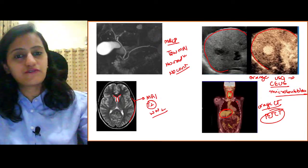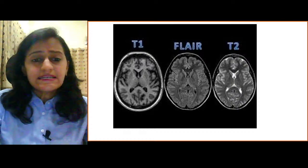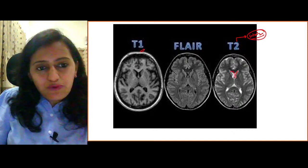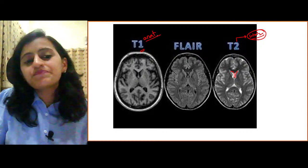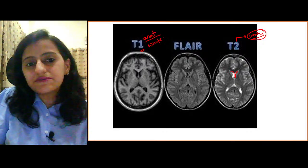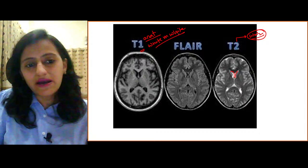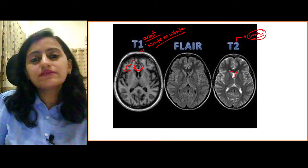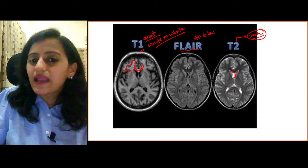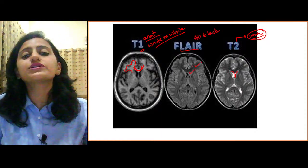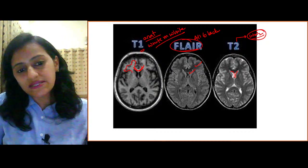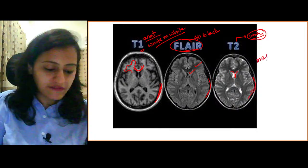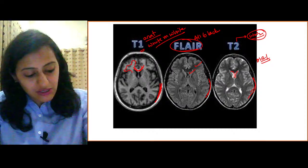Quickly revising MRI sequences: T2 — 'World War II, water is white.' T1 — white matter is white, like first-year anatomy subject. FLAIR — white matter is black, water is also black; good for picking up pathologies like edema since normal brain parenchyma is black and pathology stands out. All of these are MRI images identified by black bones.